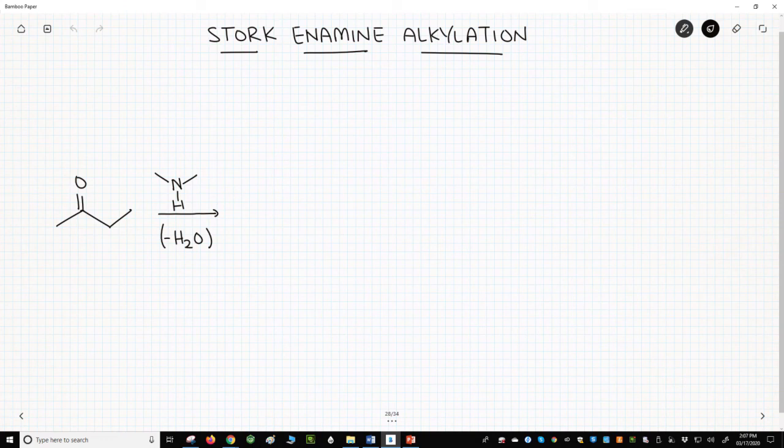For this ketone there are two possible enamines. The top structure puts the alkene on the less substituted side of the ketone. The bottom structure puts the alkene on the more substituted side. Enamines tend to form so that the alkene is as substituted as possible. So we'll get the bottom regioisomer, not the top.